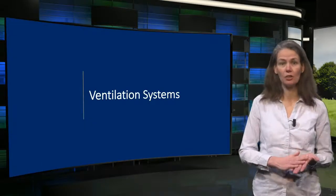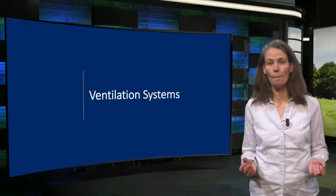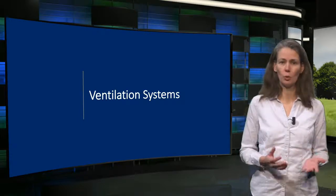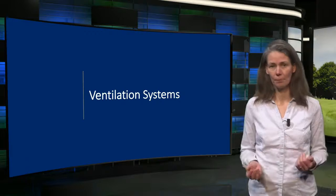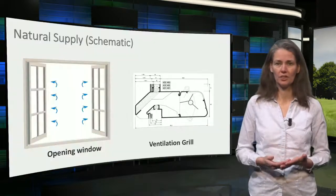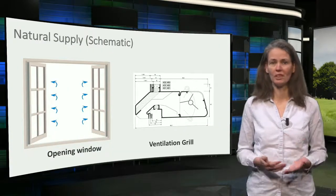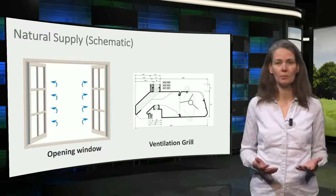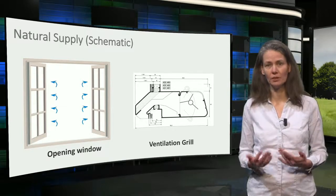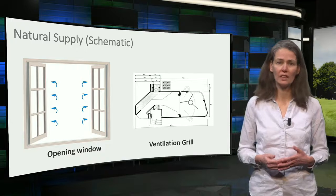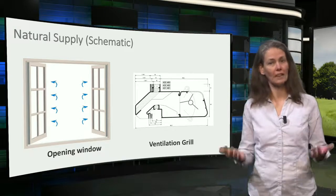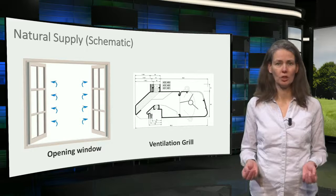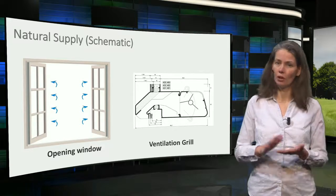Which ventilation systems ensure a minimal amount of ventilation and need a small amount of energy for moving the air? The simplest system is an operable window, shown in the schematic drawing on the left image. A more advanced system is the ventilation grill, shown in the right image, which is designed so that there is a maximum amount of ventilation possible at a given wind speed due to the maximum opening of the grill.